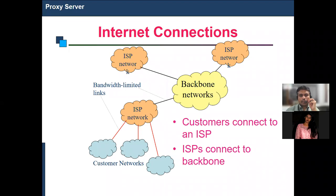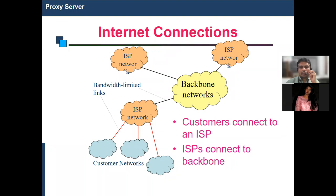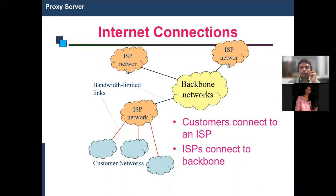In this diagram, there is a component named ISP, which stands for Internet Service Provider. ISPs are available throughout the country — there are public service providers from the government, such as BSNL and VSNL, as well as private service providers like Jio and others.